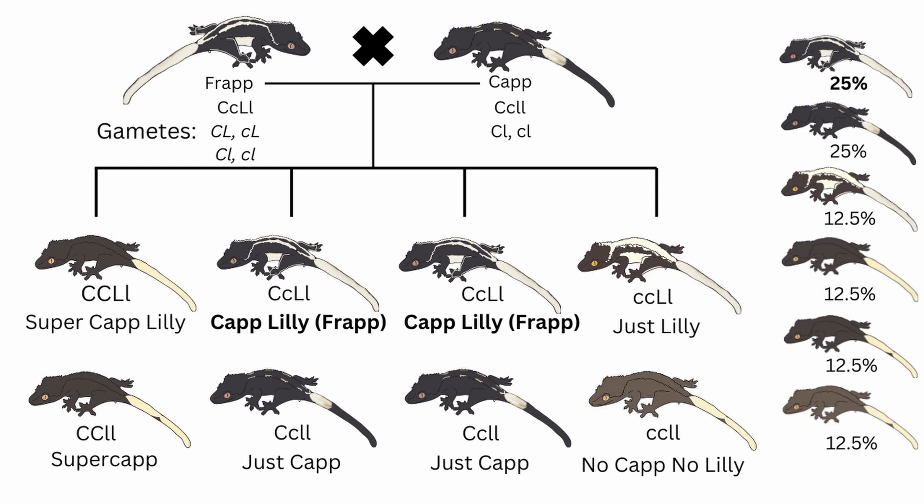When you breed a frappuccino to a cappuccino crested gecko, 25% of the kits will be frappuccinos, another 25% will be cappuccinos, 12.5% will be lily-whites, another 12.5% will be super capped lilies, another 12.5% will be super caps, and the final 12.5% will be no cap no lily. As I've said multiple times, since this pairing involves a cappuccino to a cappuccino, it is not an ethical pairing — you should not do it because crested geckos with two copies of the cappuccino gene are unhealthy.